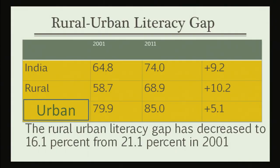Let us discuss the rural-urban literacy gap. The total literacy rate was 64.8 percent in 2001, but the rural literacy rate was 58.7 percent while the urban literacy rate was 79.9 percent. In 2011, urban literacy increased to 85 percent while rural literacy was still 68.9 percent. The rural-urban literacy gap decreased from 21.1 percent in 2001 to 16.1 percent, showing that government efforts have helped minimize the gap between rural and urban literacy.